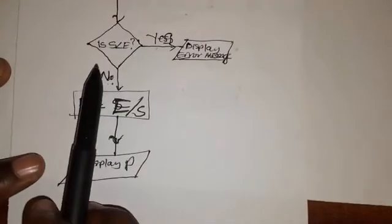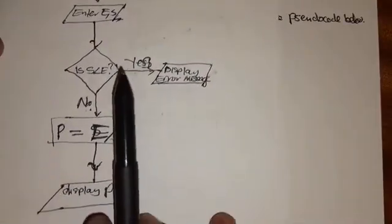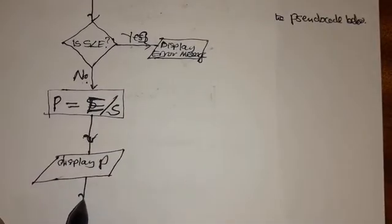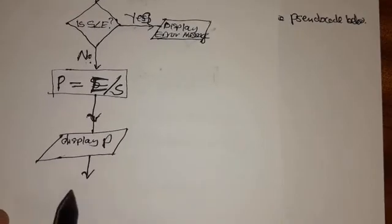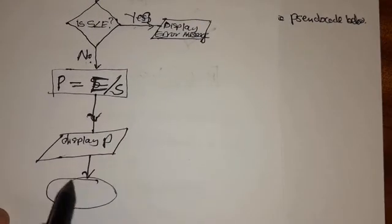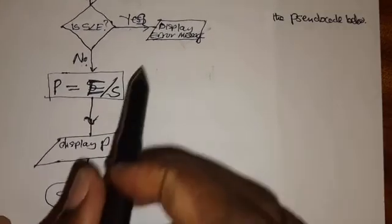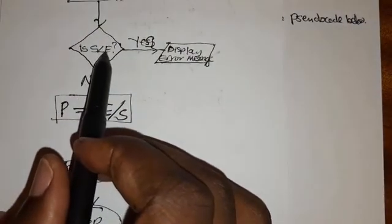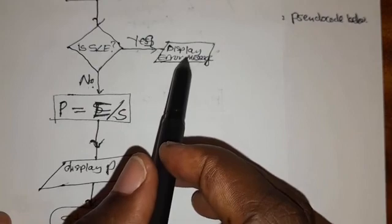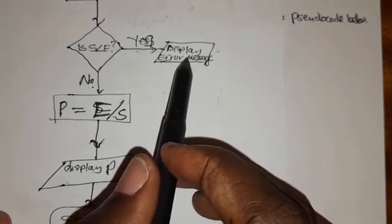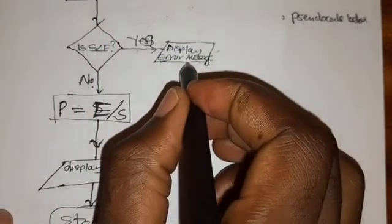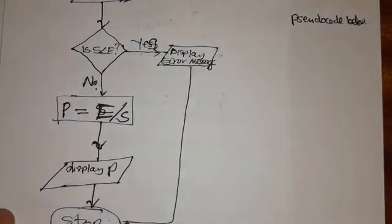Now we close the flowchart using an oval shape labeled 'stop'. Remember, we are not yet done — if S is less than E and the computer displays an error, the process also stops, so we need to connect that error branch to the stop shape as well.